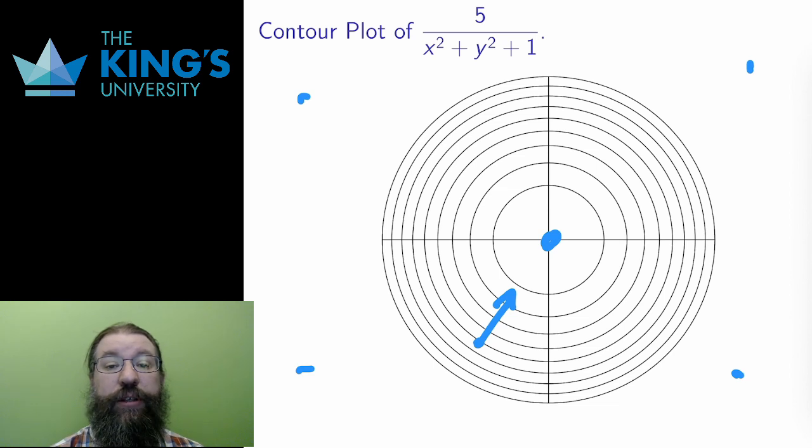This is the gradient. It is a vector in the domain. As I move in the domain, the function changes. If this were an elevation, the gradient would point in the direction of the steepest upward slope, the fastest way to get to the top of this hill.